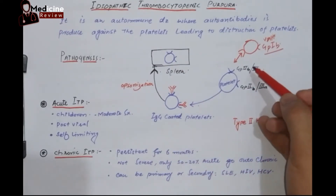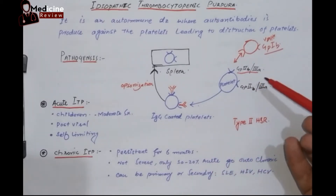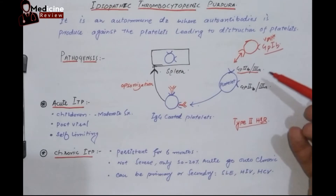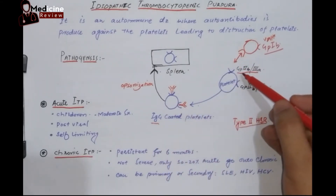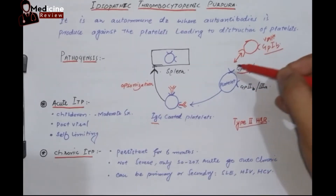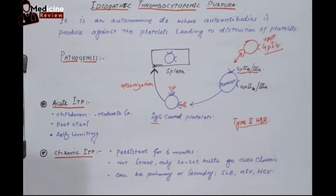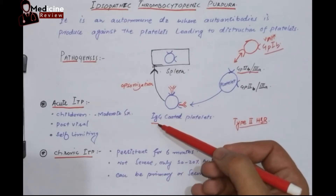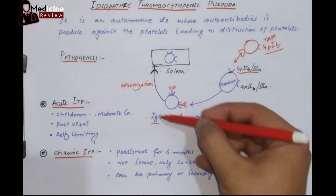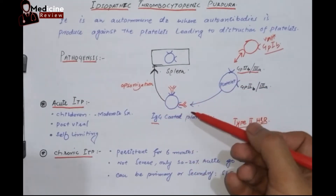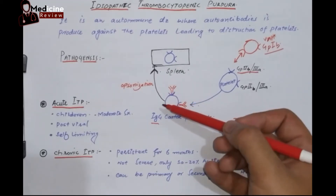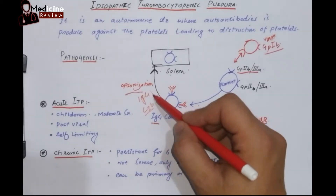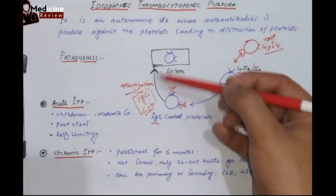In ITP, the GP2B3A receptor is recognized as foreign. Against this receptor, autoantibodies are produced. ITP is a type 2 hypersensitivity where autoantibodies, especially IgG, are produced against the GP2B3A receptor. Whenever these platelets are flowing in the blood, these IgG attach to the platelet, and these platelets are then called IgG-coated platelets. This process is called opsonization.